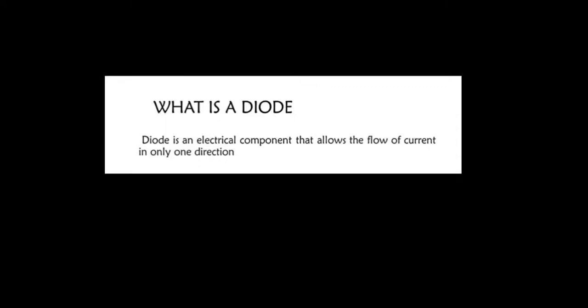Hello y'all, welcome to today's lesson. In this video we will learn about diode models. First of all, let's know what a diode is. A diode is an electrical component that allows the flow of current in only one direction. Now let's talk about diode models.